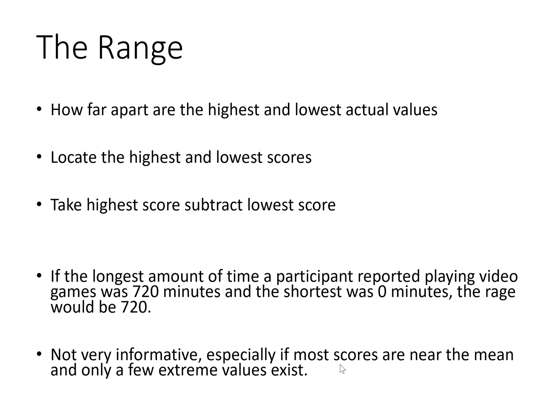So if the longest amount of time someone reported playing video games is 720 minutes and the shortest was zero minutes, the range would simply be 720 minus zero. So the range is not a good measure of variability, but it does give you an idea of what the largest and smallest values in your data set are and how far apart they are. Sometimes that can be useful information if you have a very extreme outlier, it will help you to identify that pretty early on in your exploring of your data.